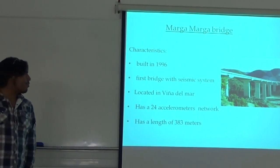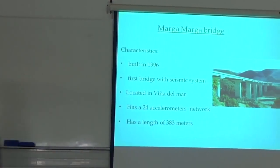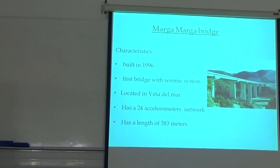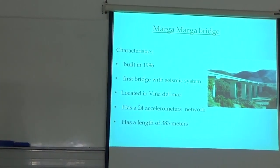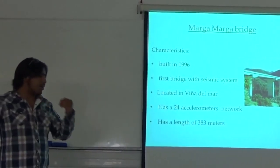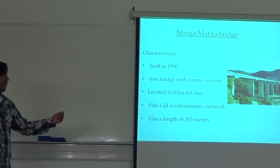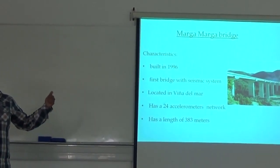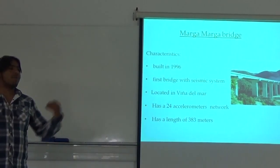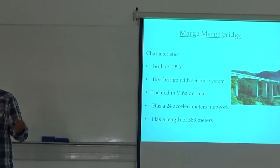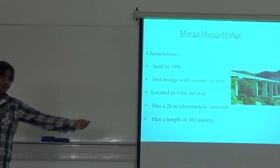The Marga Marga bridge characteristics in our review: it was built in 1986. It was the first seismic system. It's located in Viña del Mar in the Marga Marga Creek. And it had 24 accelerometers network. And this is important because these accelerometers will take all the information of the 27 February earthquake. And it has 383 meters.